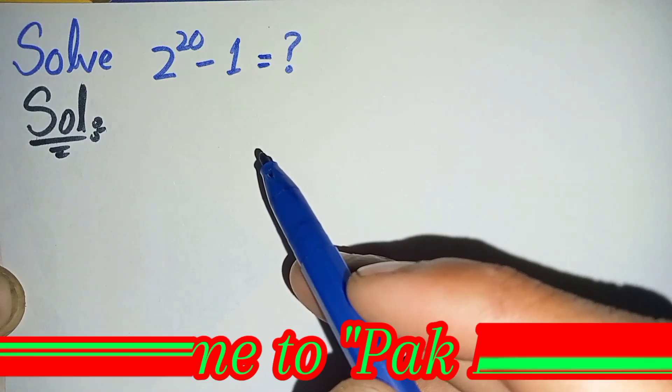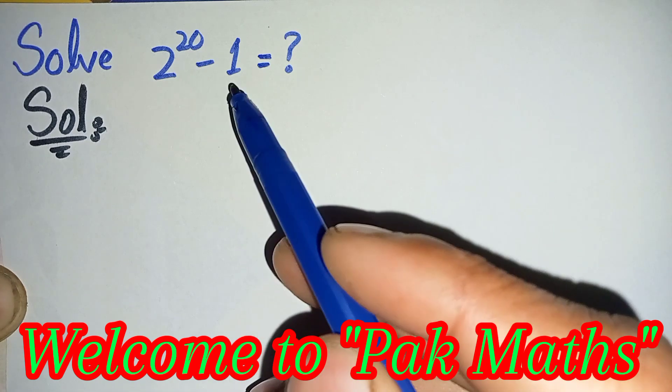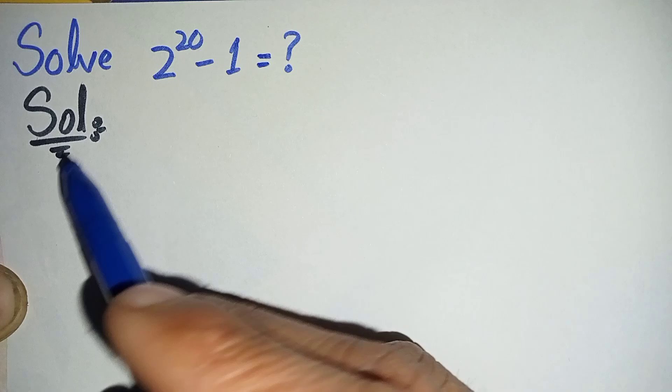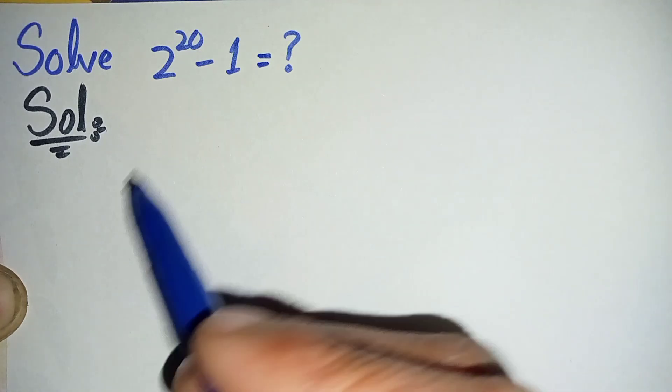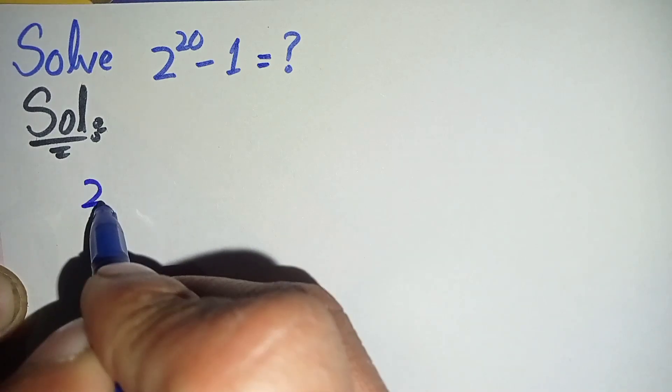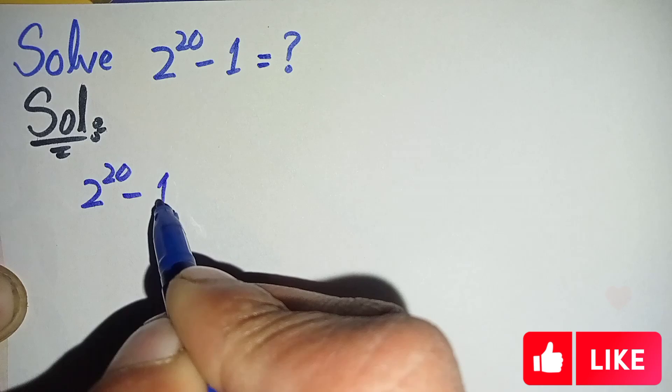Hi everyone, welcome to Parkmas. How to solve 2 raised to power 20 minus 1. To solve it properly, first we will write solution, and then we will write this question in the solution again. So the question is 2 raised to power 20 minus 1.